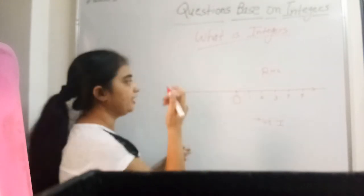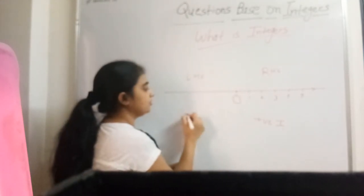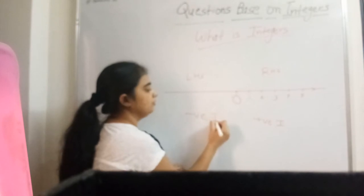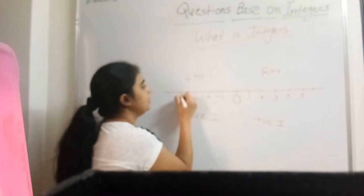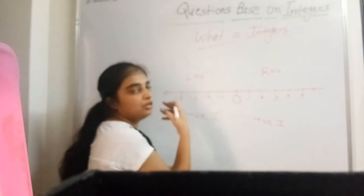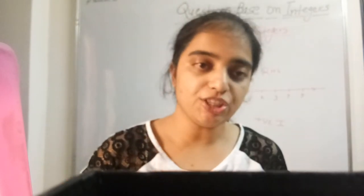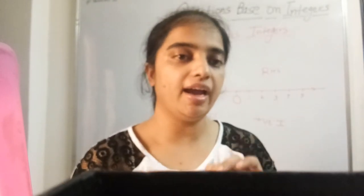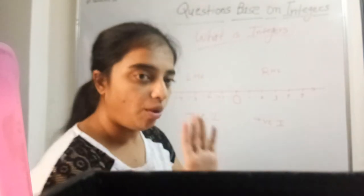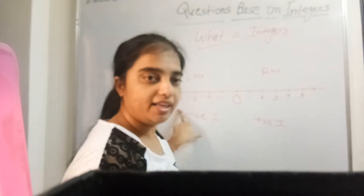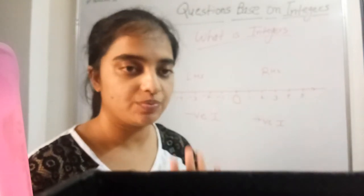On the left-hand side of 0, you get all negative integers — minus 1, minus 2, minus 3, minus 4, and so on. So basically, integers kya hote hain — the combination of negative and positive numbers including 0. The combination of positive and negative numbers including 0 is called integers.